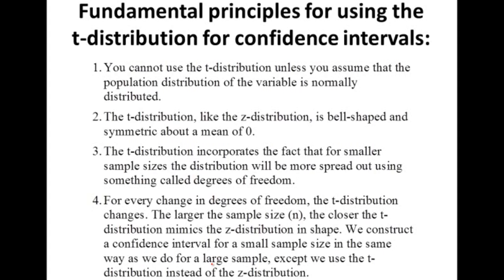The variable must be normally distributed — the population from which the sample is drawn must be normally distributed. The t-distribution, like the z-distribution, is bell-shaped and symmetric about a mean of zero. Both distributions are bell-shaped with mean zero — both t and z.